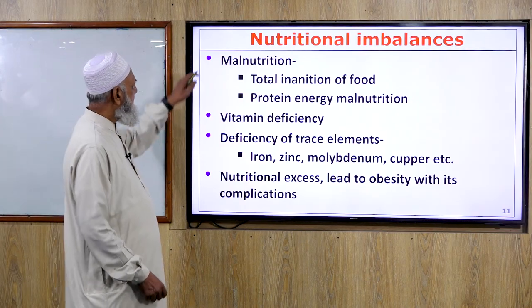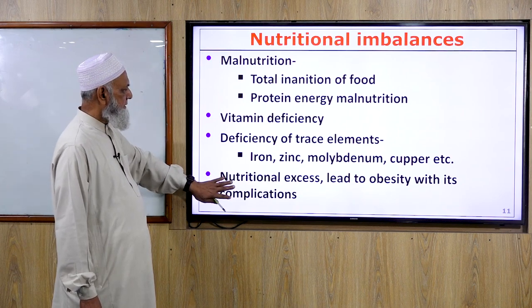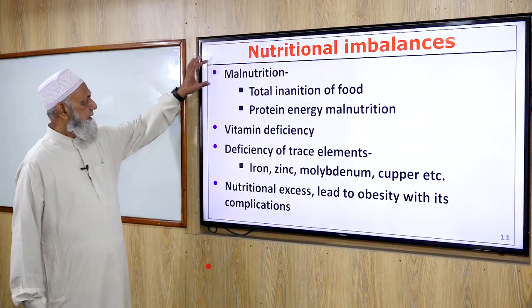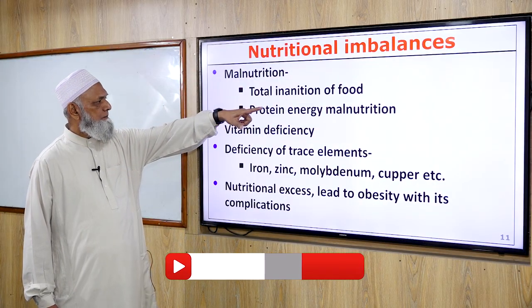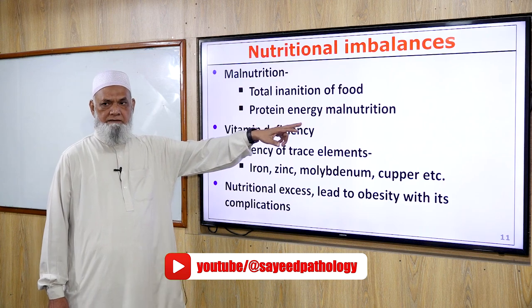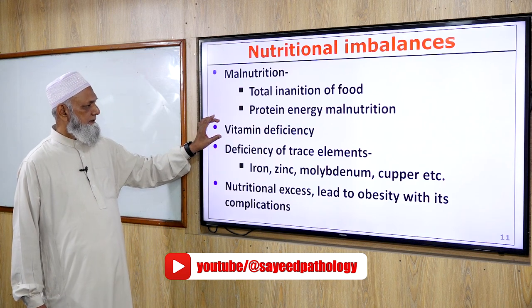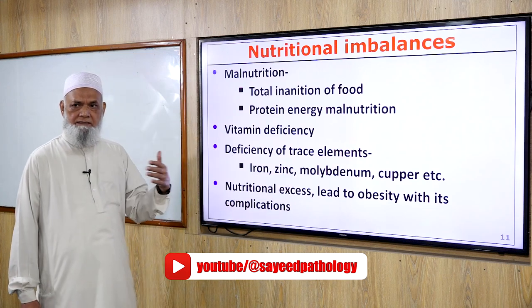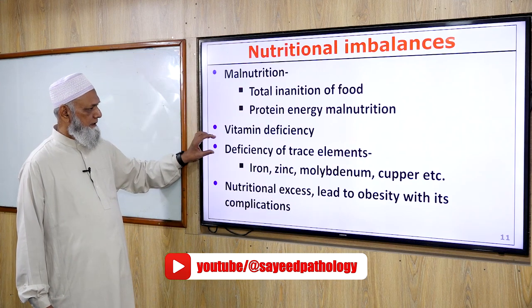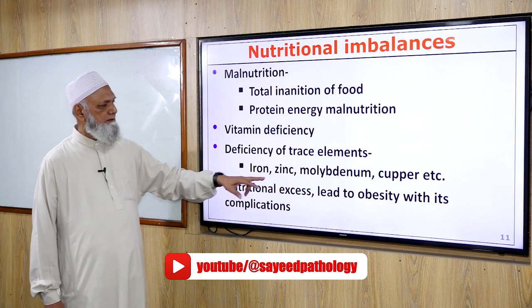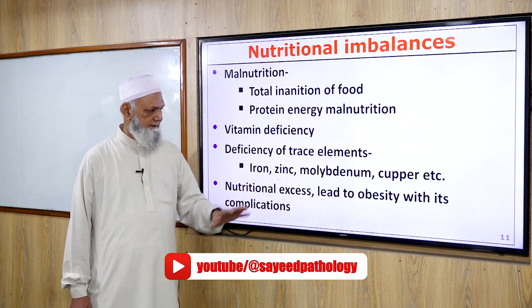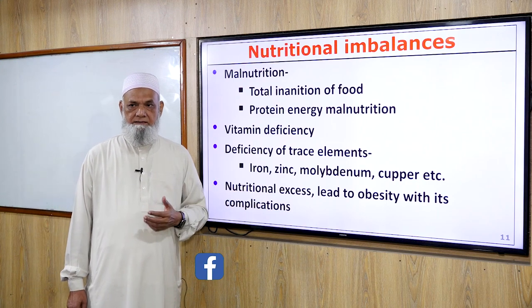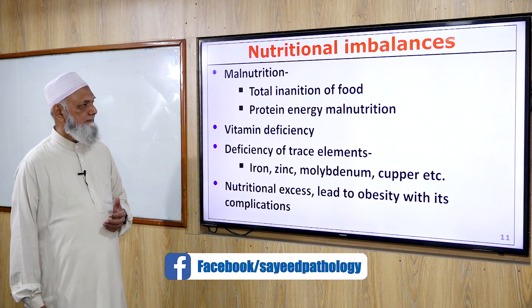Nutritional imbalances include malnutrition, over-nutrition, vitamin deficiency, and deficiency of trace elements. Malnutrition includes total inanition of food or protein-energy malnutrition. Vitamin deficiencies can be of all types, single or multiple. Trace element deficiencies include iron, zinc, molybdenum, copper, etc. Nutritional excess leads to obesity with its complications.